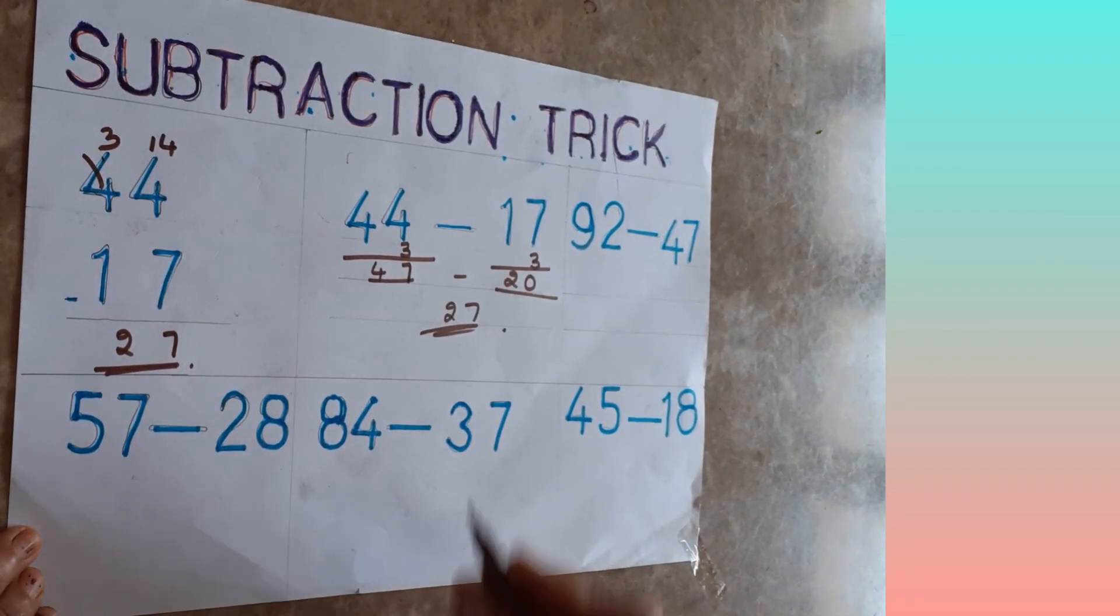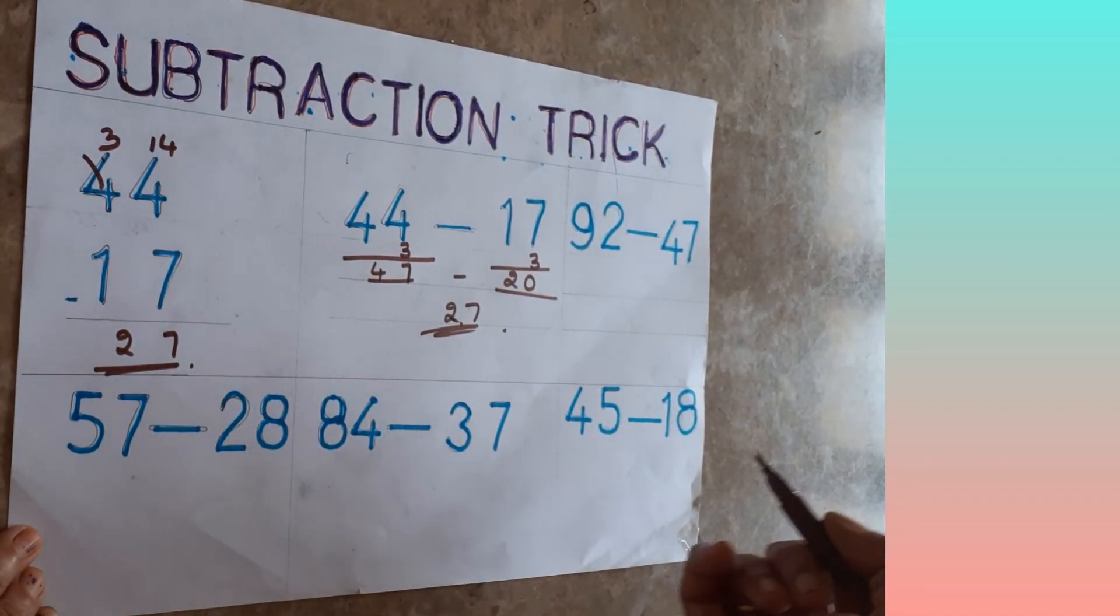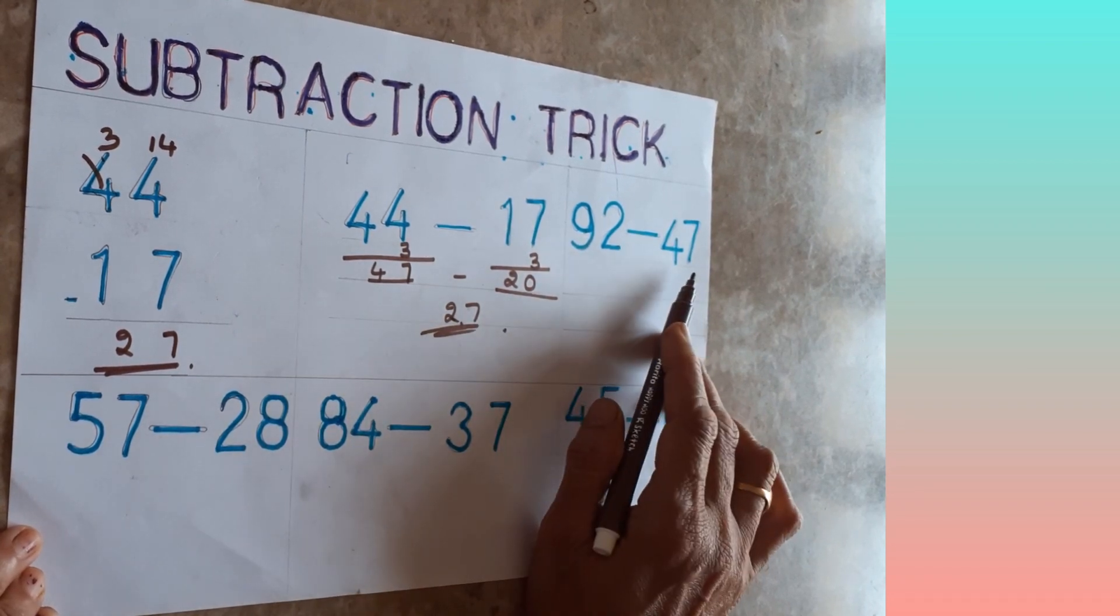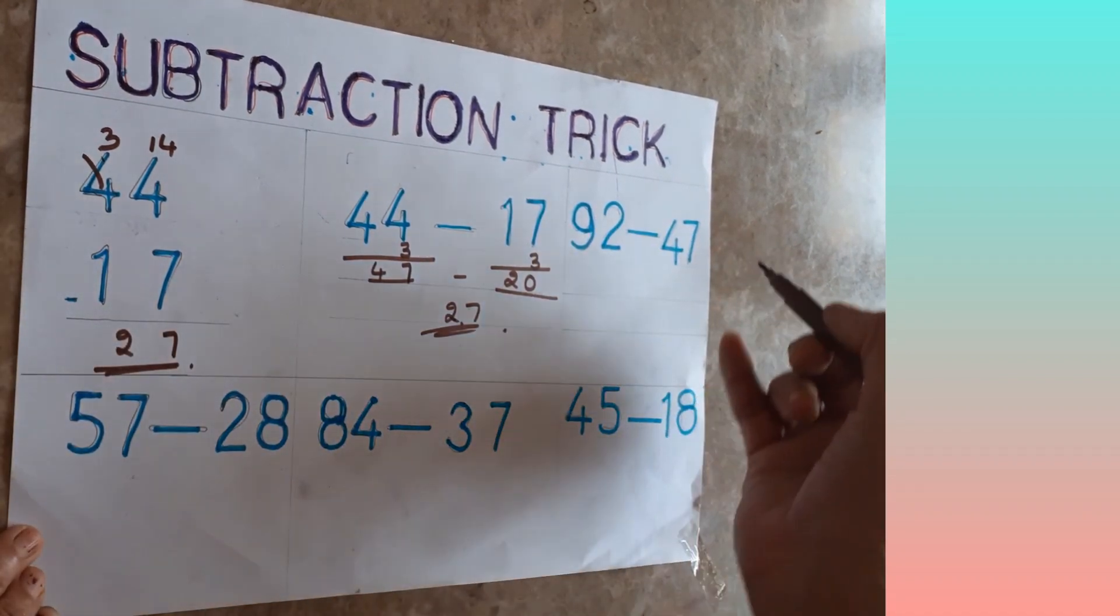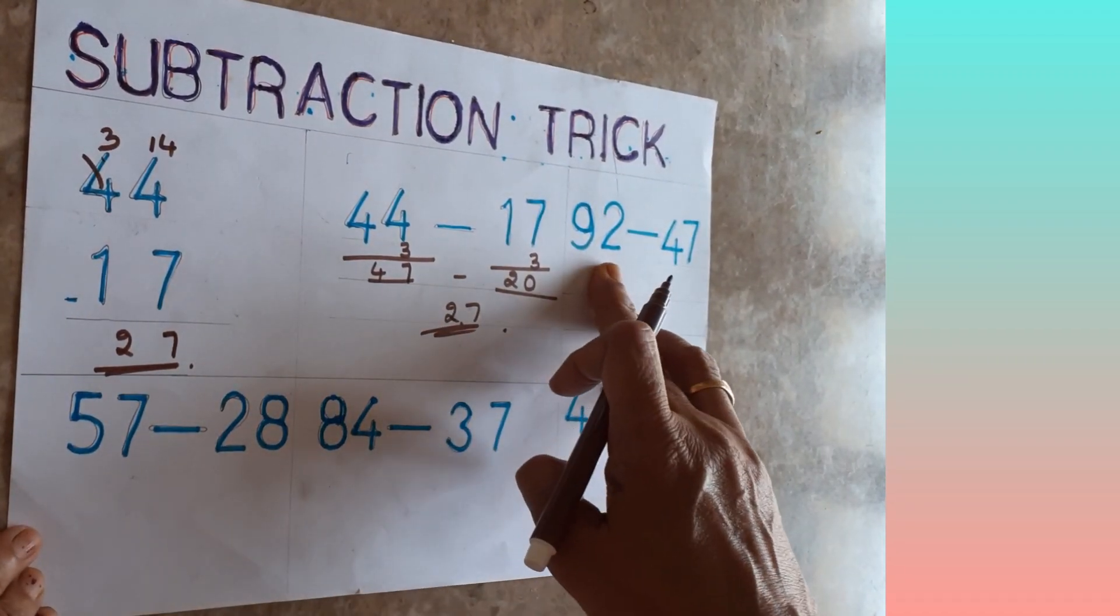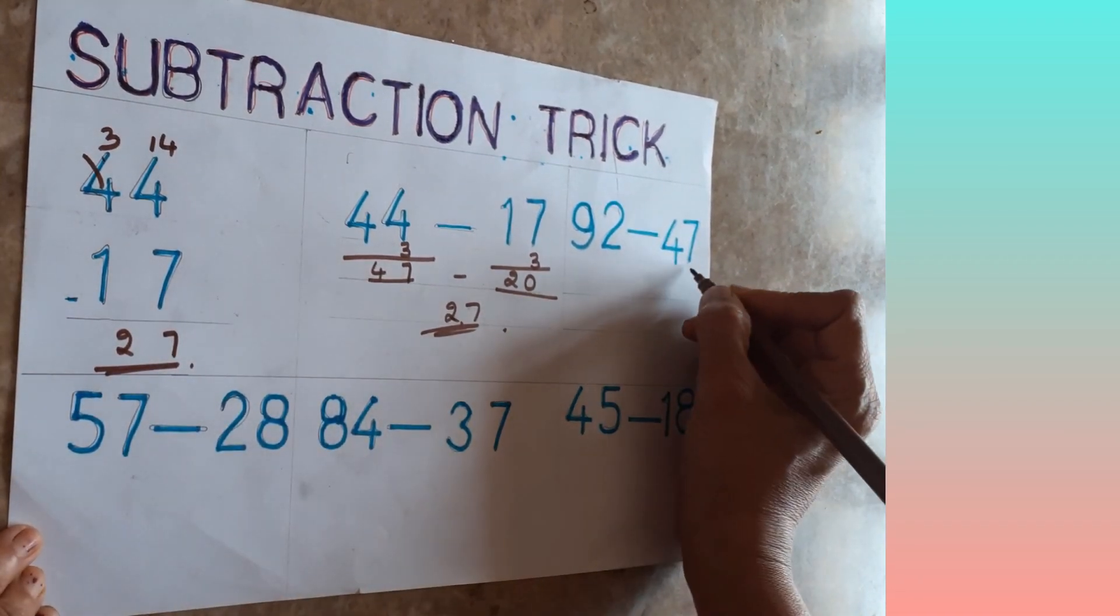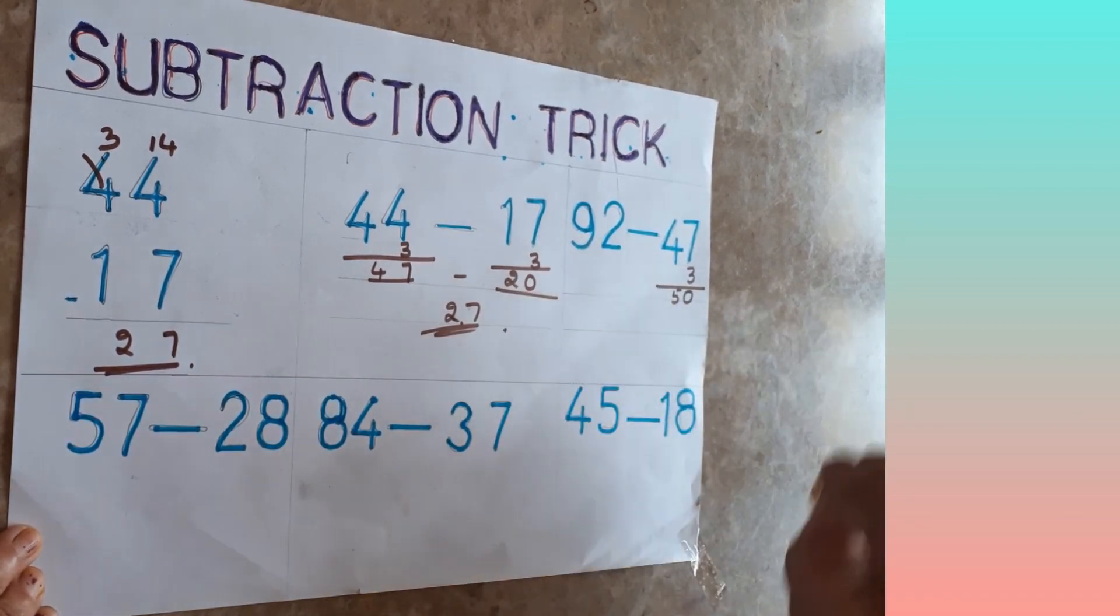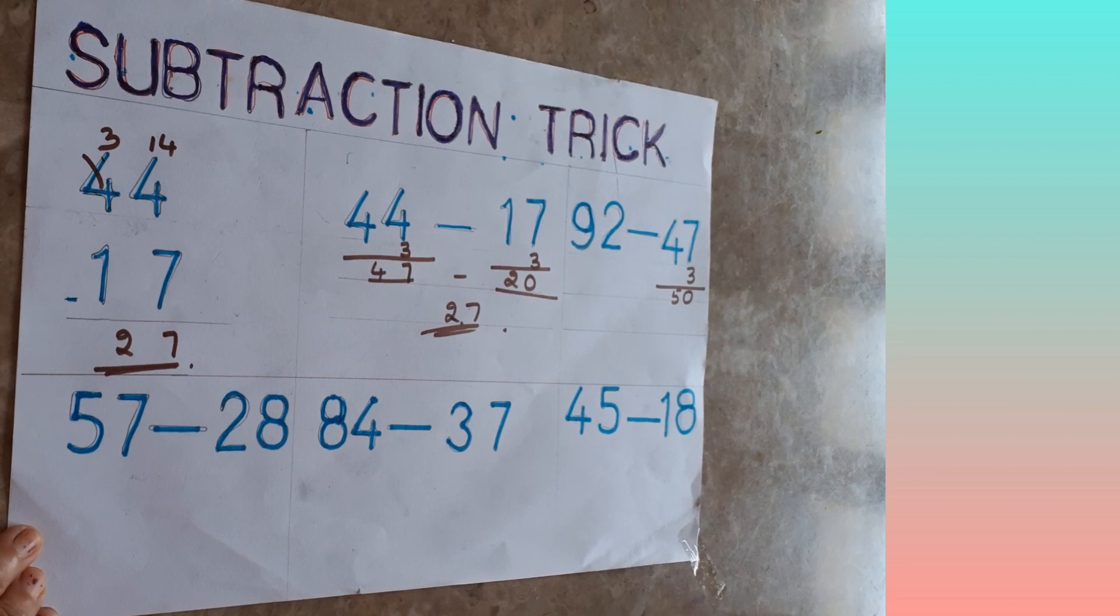See, now three more examples I'll teach you. 92 minus 47. Here, what is the nearest thing? You have to round figure one number, any big number or small number. You see which number you can add and you can make it round figure. Here 2 means you have to add more numbers. Here 7 means you can add only 3 numbers. That means it will become 50.